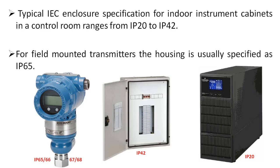Typical IEC enclosure specifications for indoor instrument cabinets in a control room range from IP20 to IP42. For field-mount transmitters, the housing is usually specified as IP65, because it is in an outdoor atmosphere where there is a chance of water spillage. For outdoor applications, IP65 or above rated transmitters are to be used. Here you can see a control panel with an IP42 rating, and a UPS located in the control room with an IP20 rating — meaning it has no protection against water spillage, so care should be taken while using this type of equipment in water spillage areas.